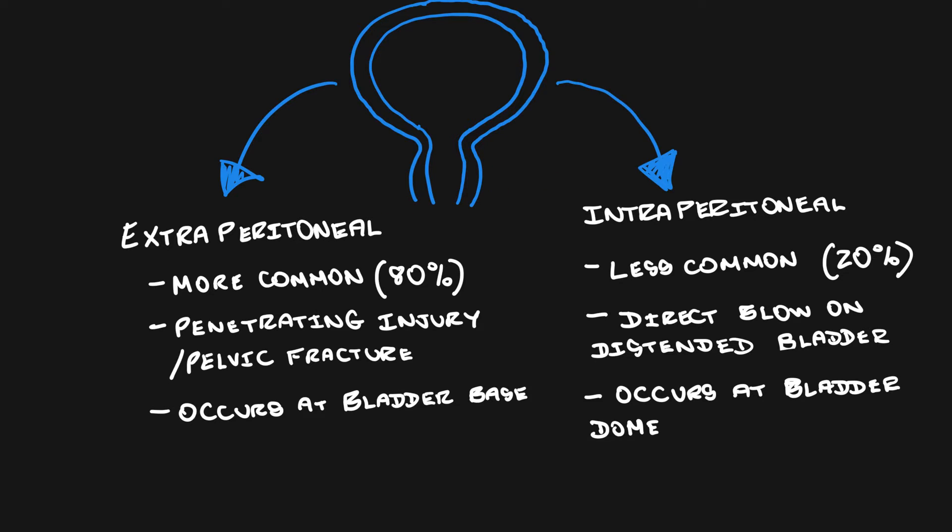Whereas in intraperitoneal ruptures, it's usually the top of the bladder at the bladder dome.